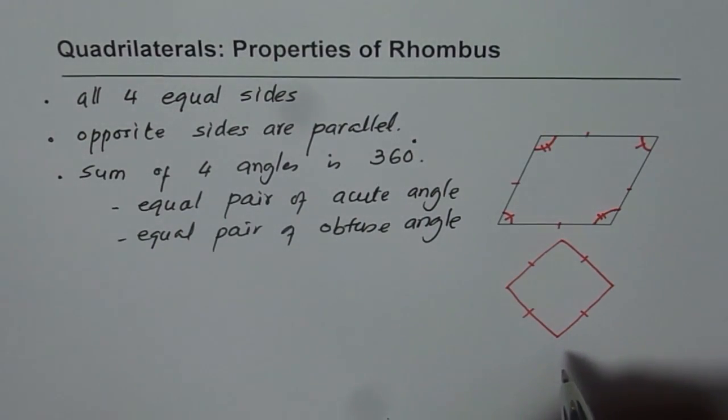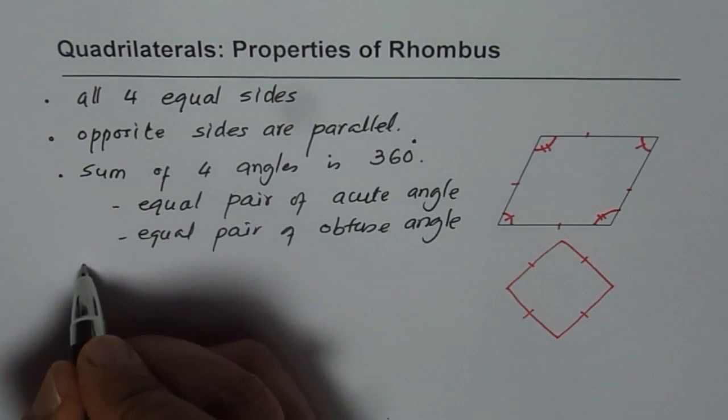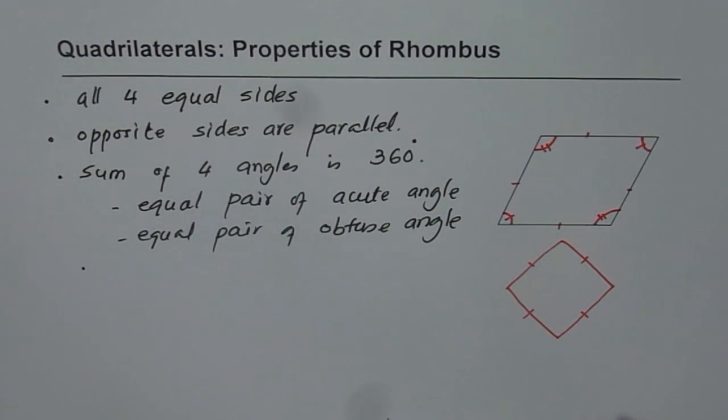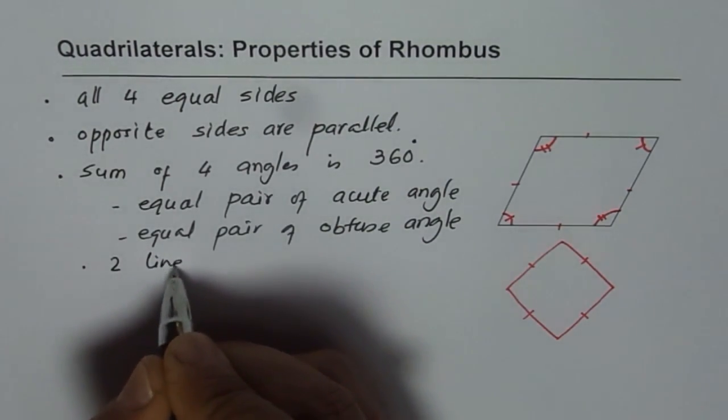So these are the characteristics about angles and sides. How about the lines of symmetry? How many lines of symmetry does it have? It has two lines of symmetry.